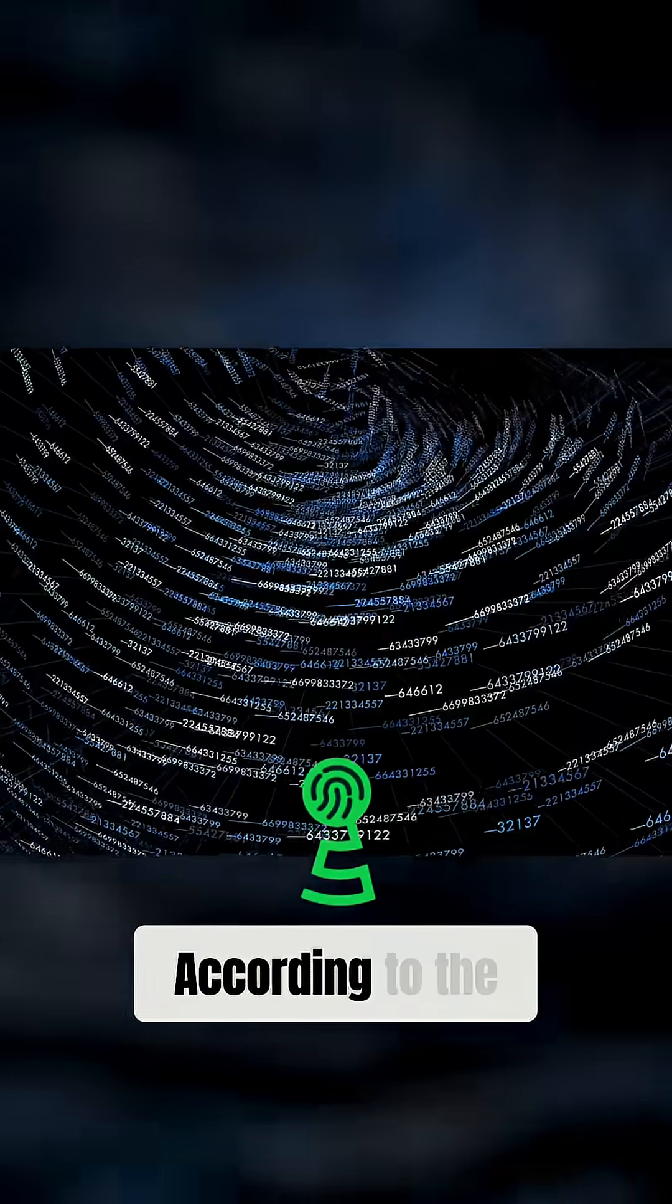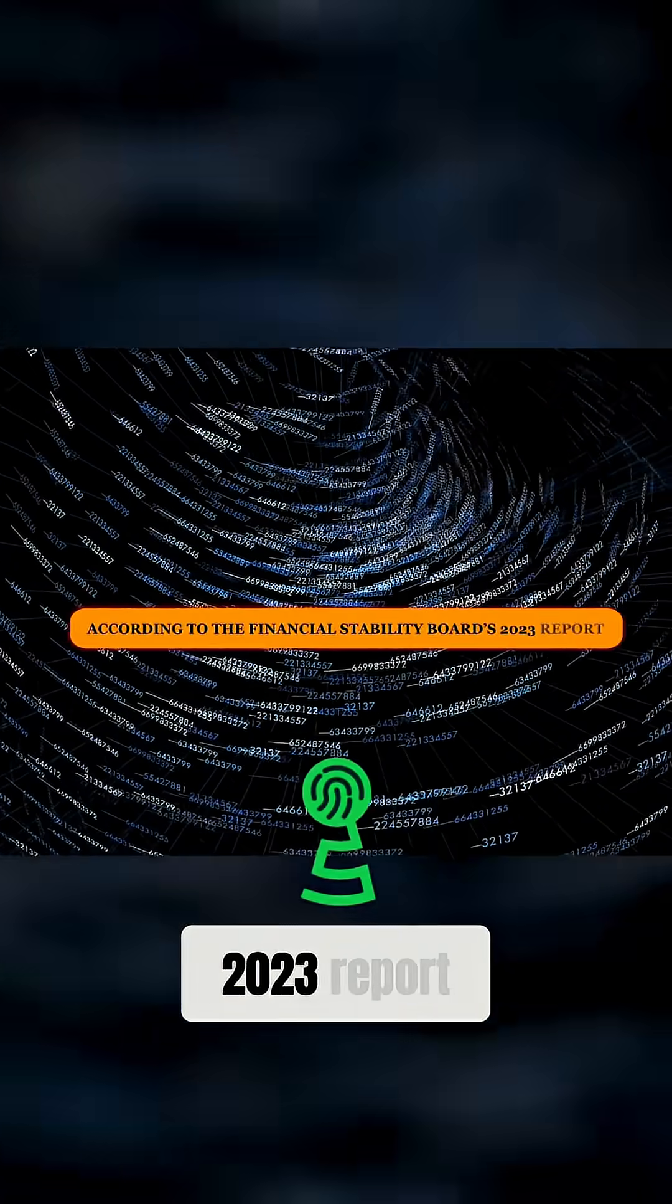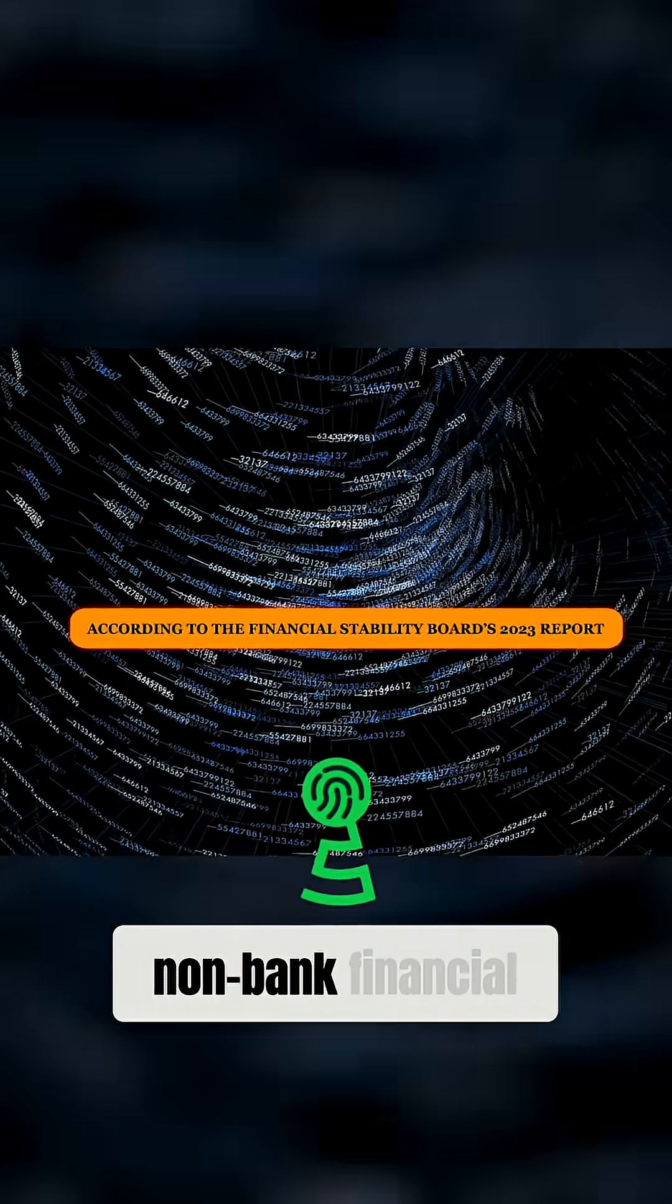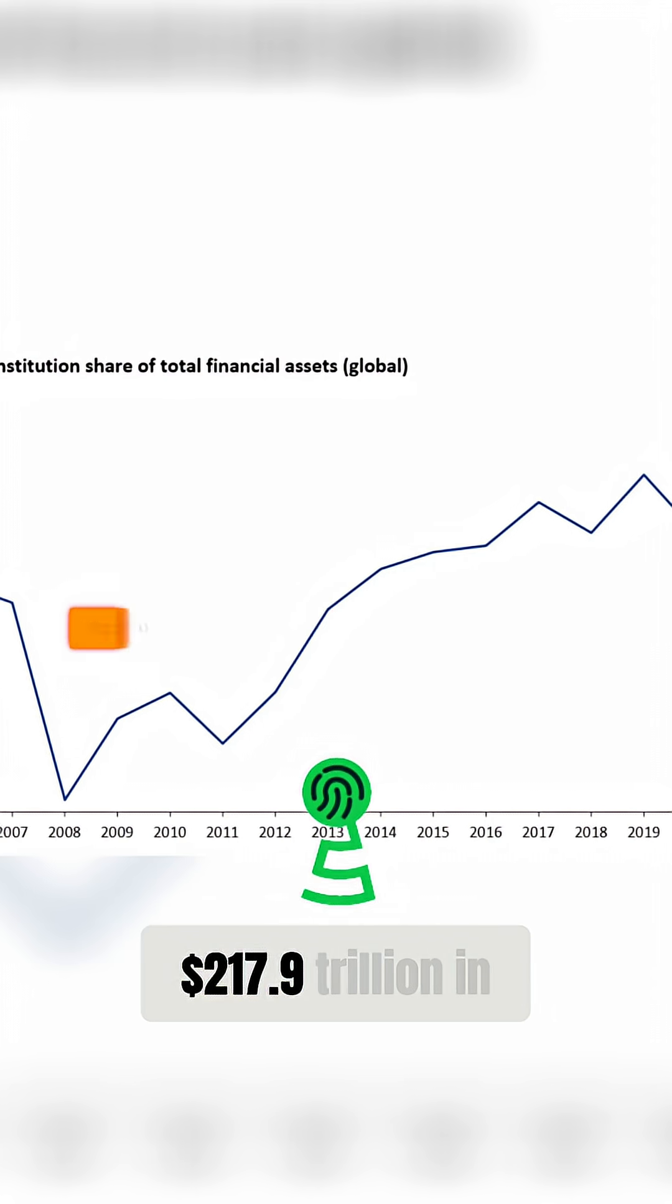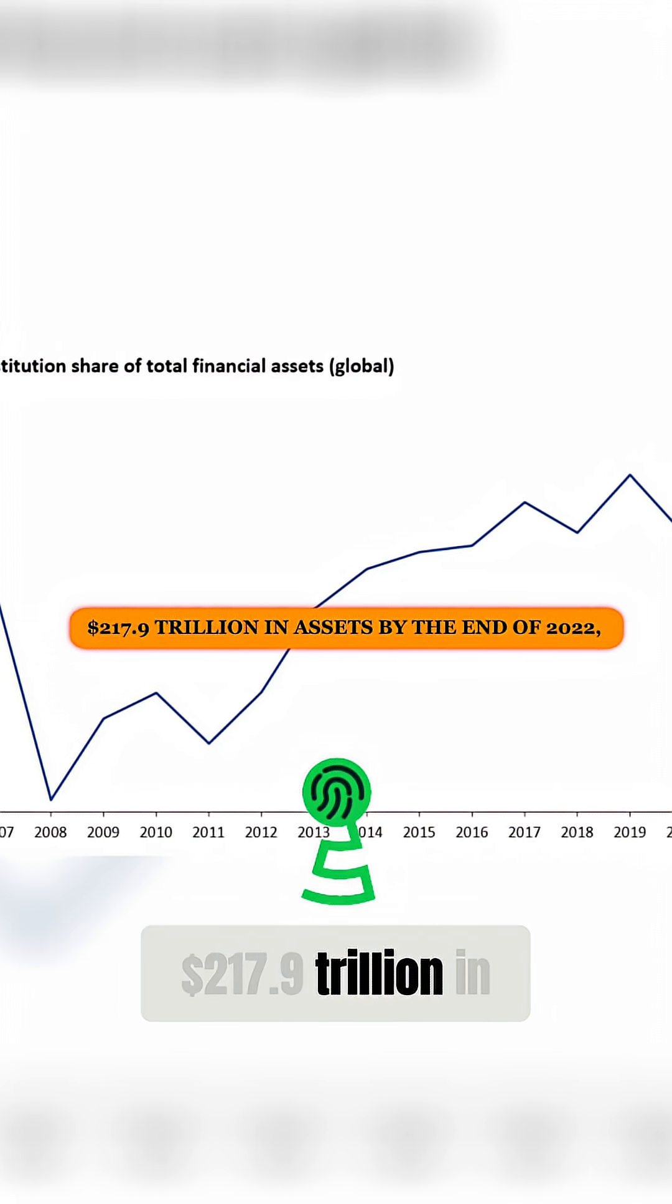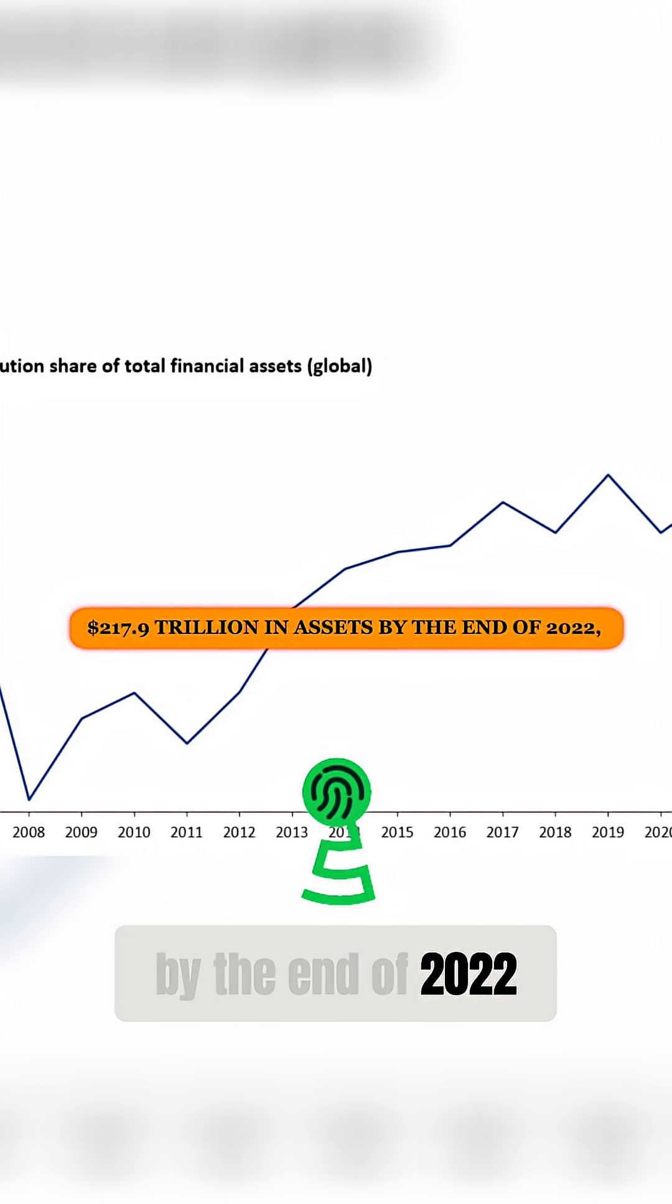The scale is staggering. According to the Financial Stability Board's 2023 report, non-bank financial intermediation held $217.9 trillion in assets by the end of 2022, accounting for 47.2% of global financial assets.